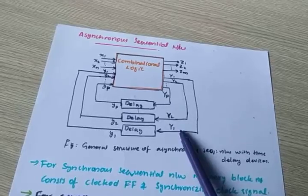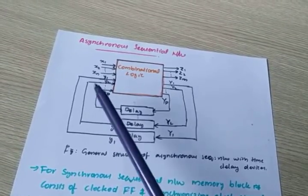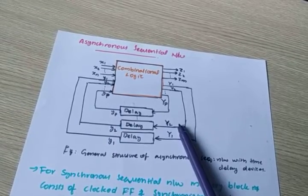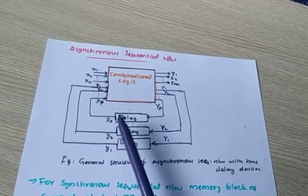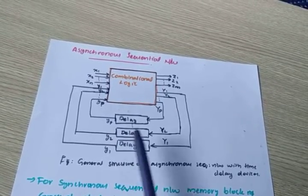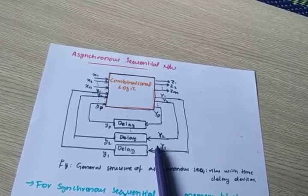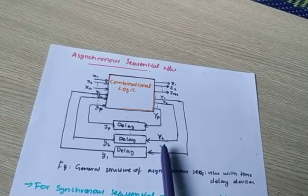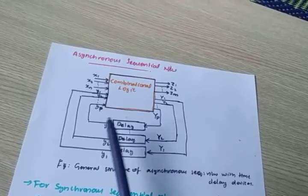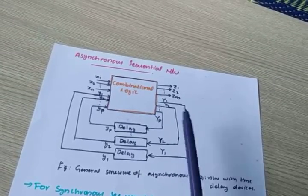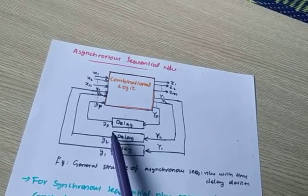Capital Y1, Y2, Yp are the next state, and small y1, y2, yp are the present state. The output is taken to the delay element, and after a time delay it is fed back to the input as the present state. The next state is waiting for a time delay, and after that delay the next state gets updated and becomes the present state. So Y1, Y2, Yp are the next state — they are waiting to get into the memory unit — and after the time delay that next state becomes the present state.